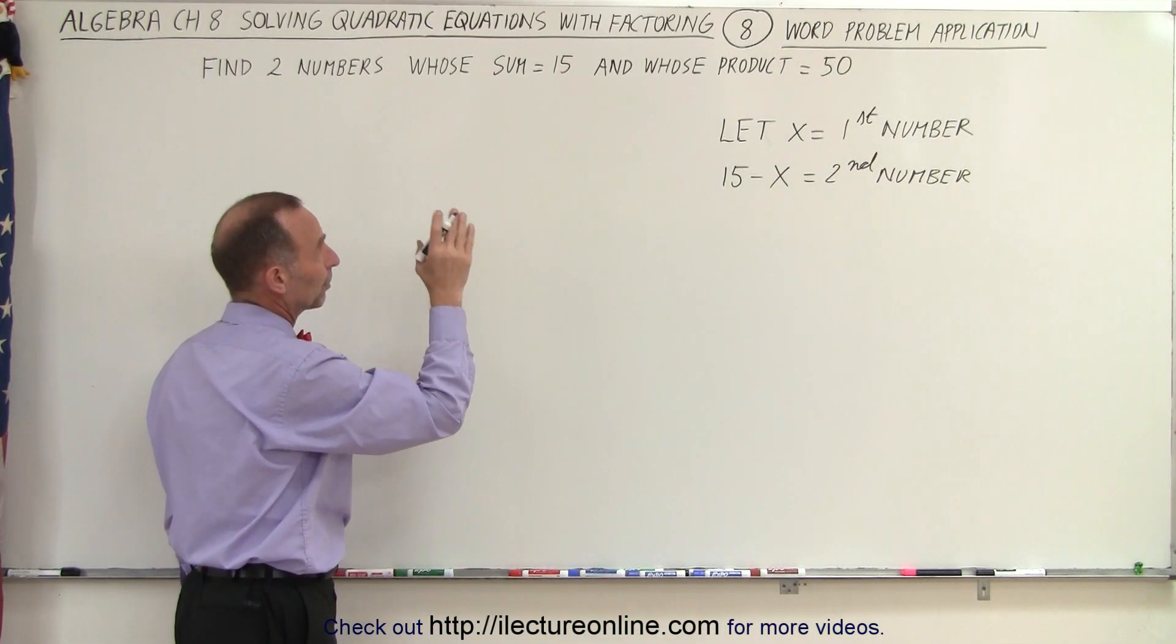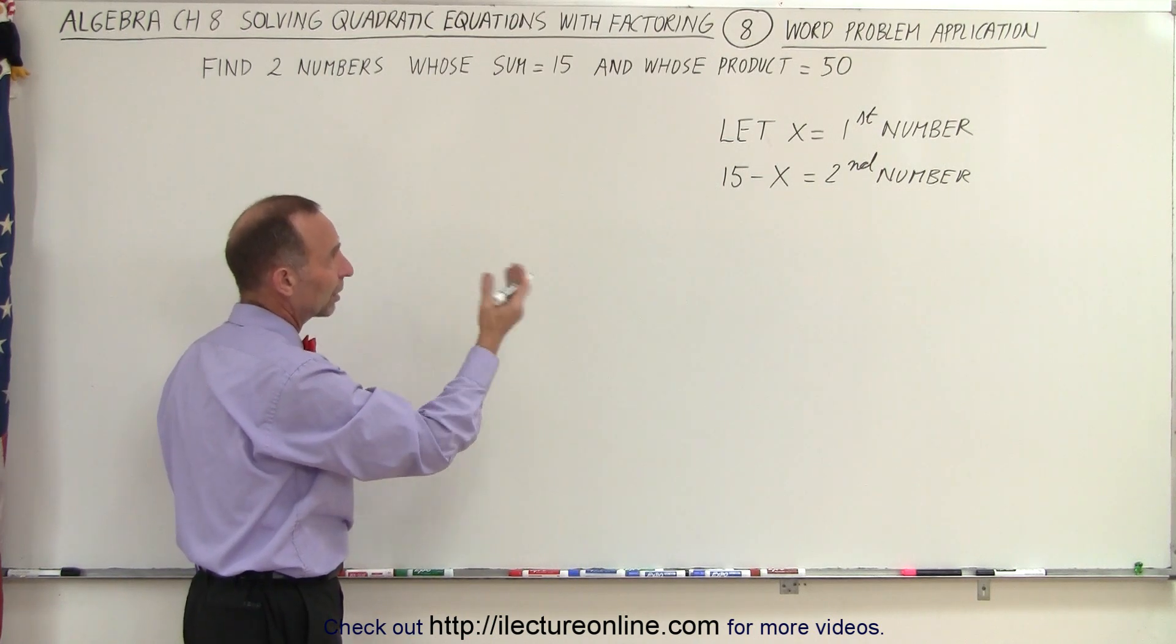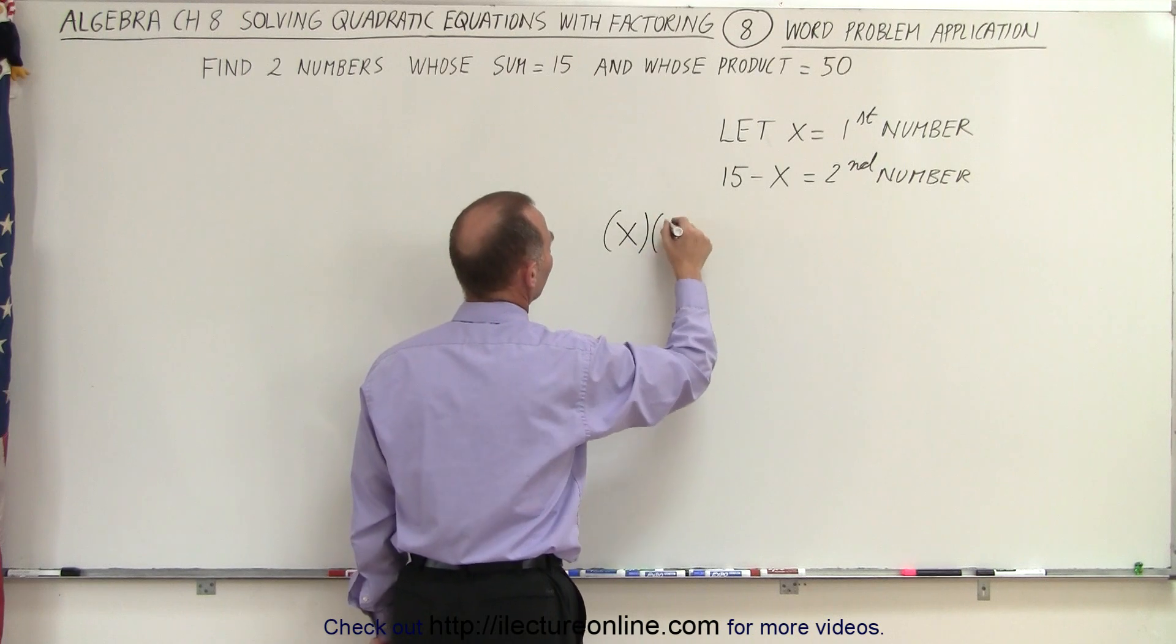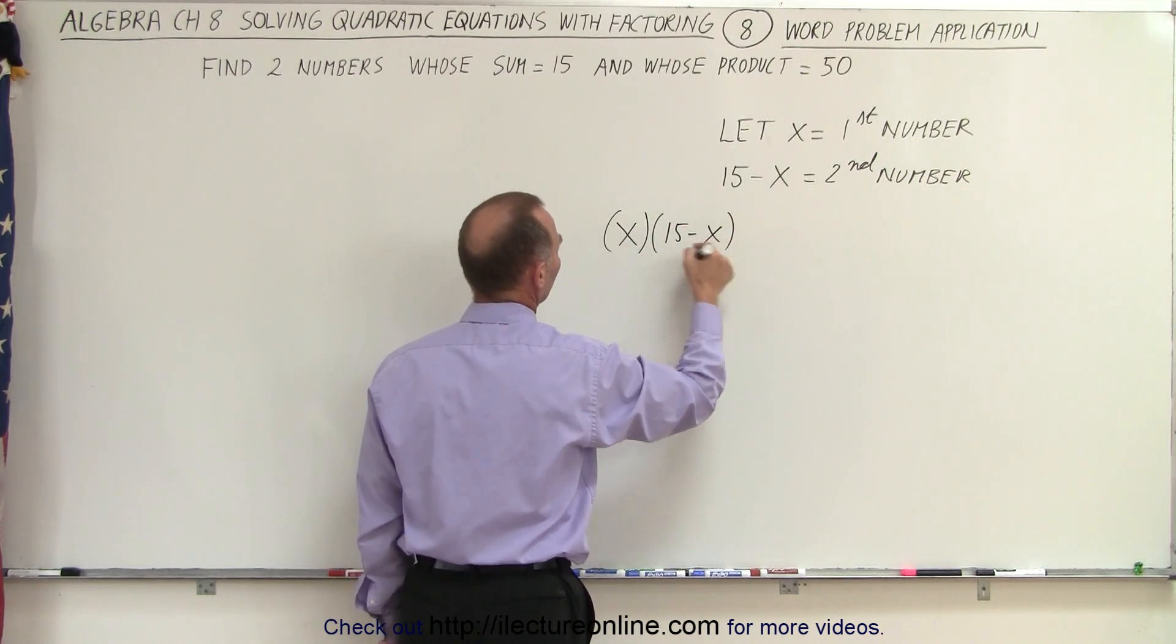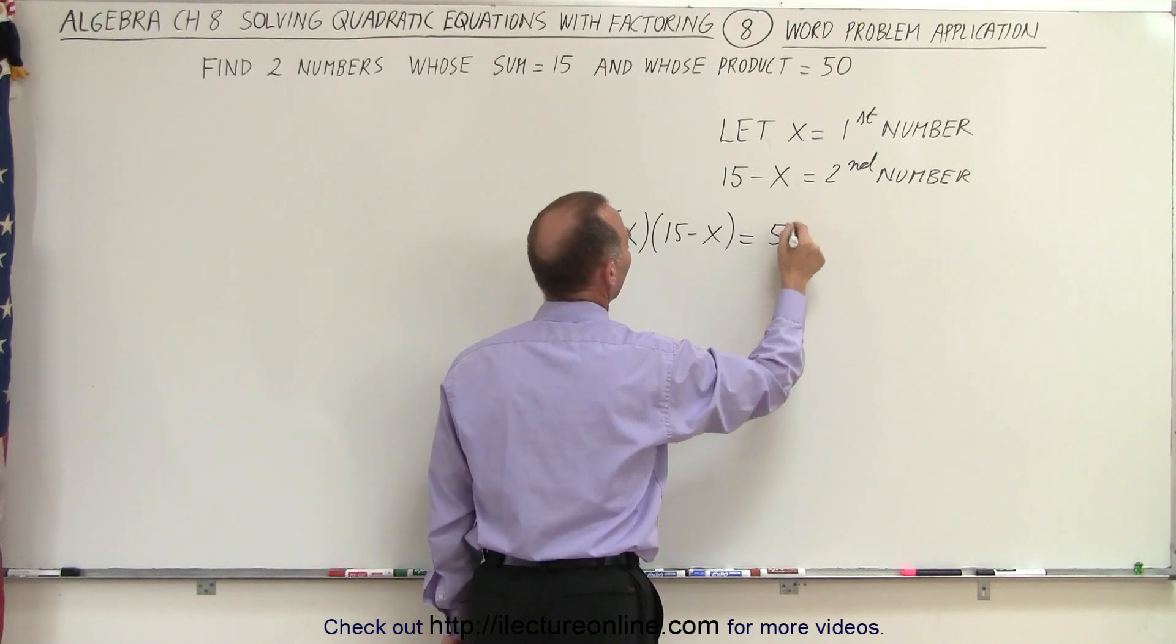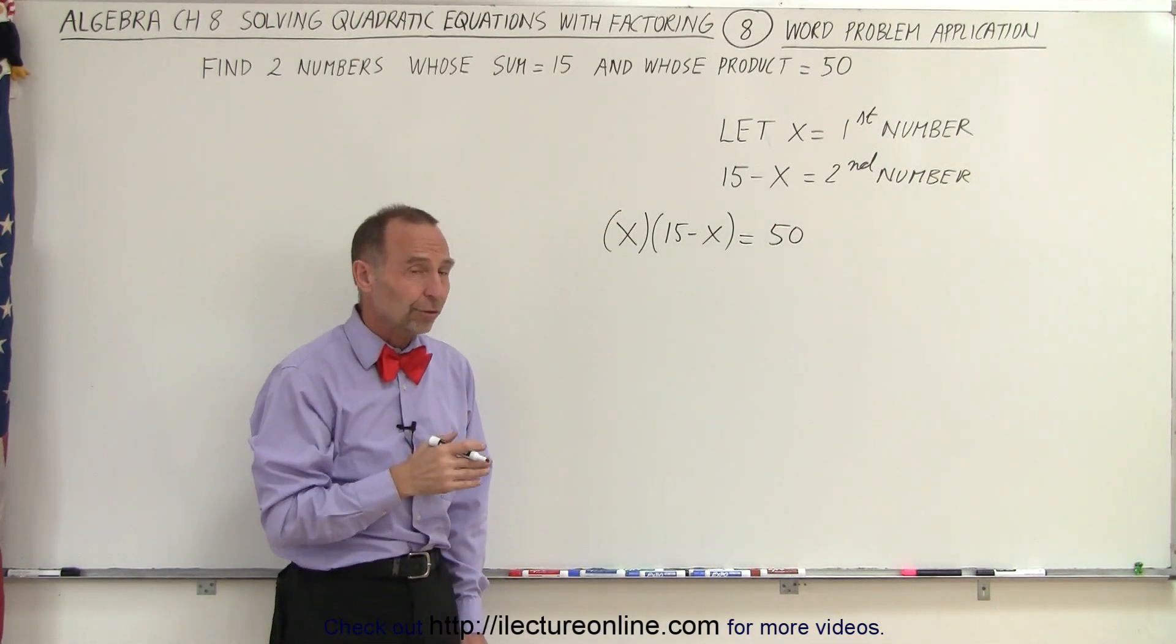Now we use the information about the product. We are told that the product equals 50, which means that x multiplied times 15 minus x, that's the product of the first and the second number, must equal 50. And this looks like a quadratic equation.